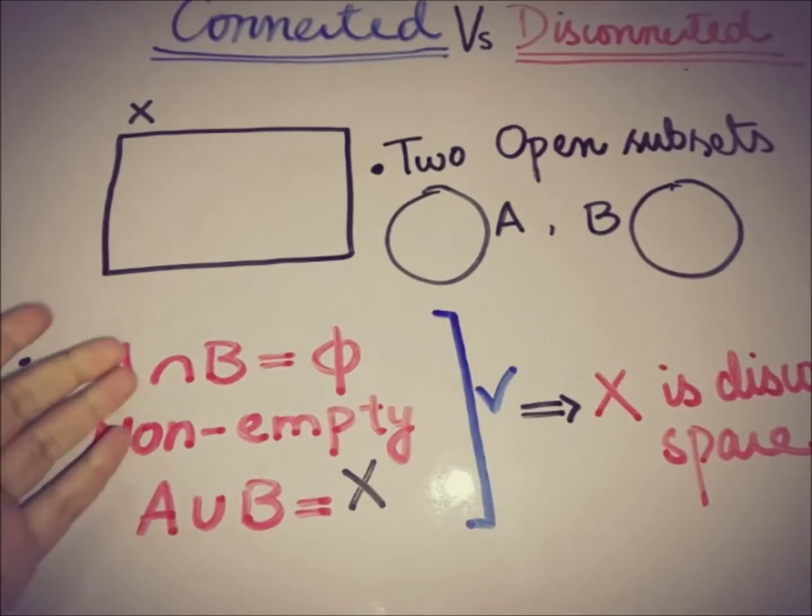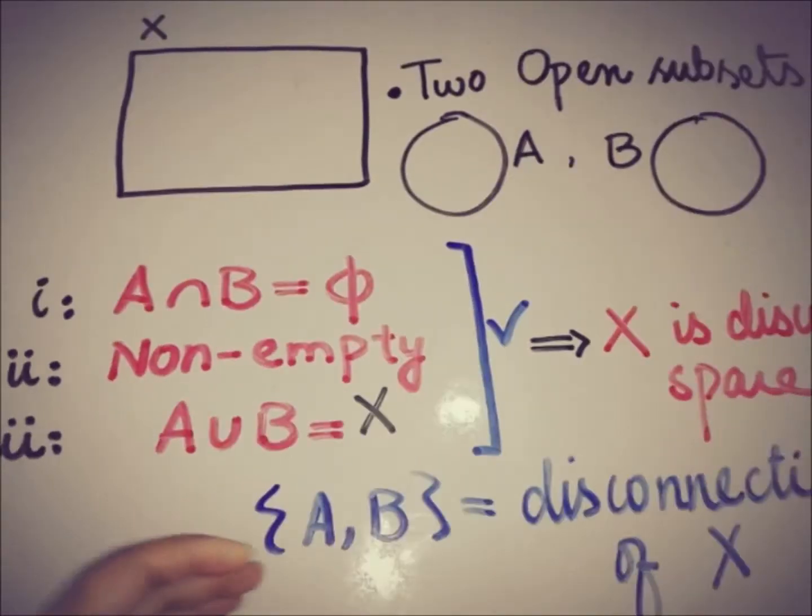And the pair A and B is known as the disconnection of X, and we can write them {A, B} in that set bracket. So this is the definition of the disconnection or the disconnected space.